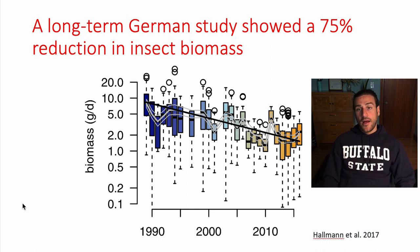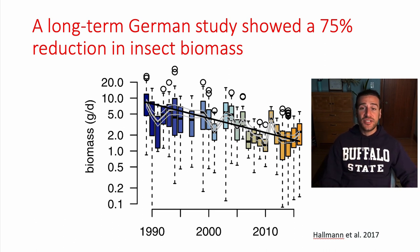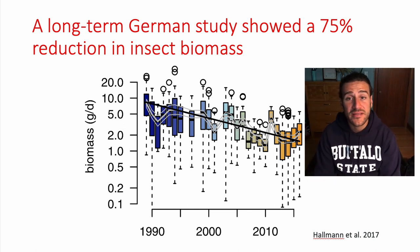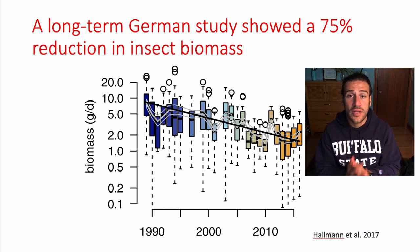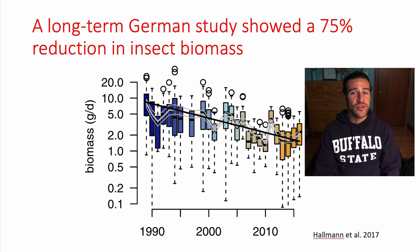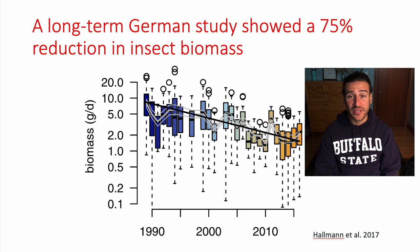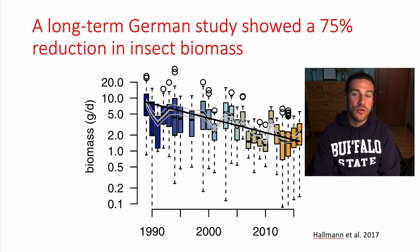Hallman et al. in 2017 released a paper that really shook up the entomological world. These German researchers carried out a nearly 27-year study, which is a main reason it was so impactful — if it was just a one-year study, researchers could say it was an anomaly, maybe just a dry summer in Germany. But a steep decline over almost 30 years is very alarming and rules out any single-year anomaly.